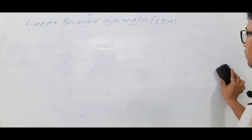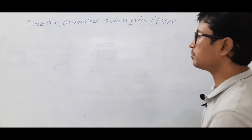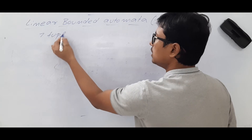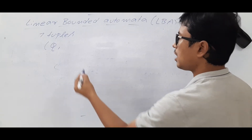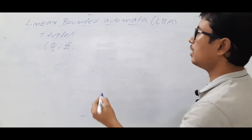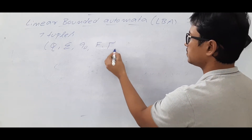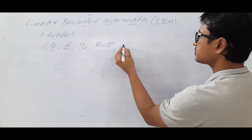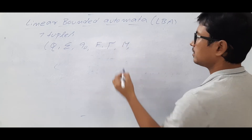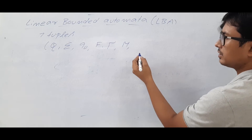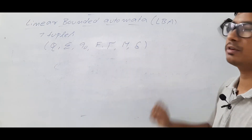Now we will discuss how to represent a linear bounded automata. The linear bounded automata can be represented using 7 tuples. We have Q, sigma, Q-naught, F, tau, markers M (left marker and right marker), and a transition function delta. Some people represent it using 8 tuples, writing the left marker and right marker separately — here I am representing M for the markers.